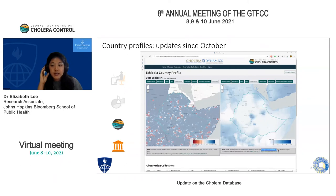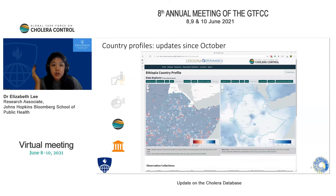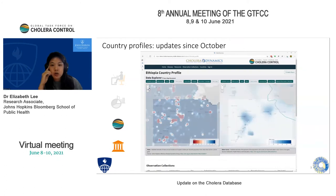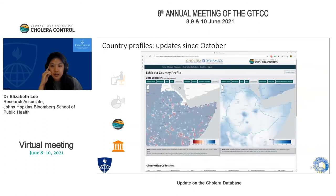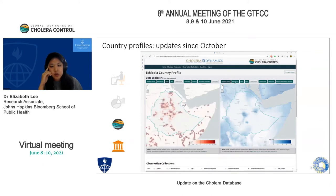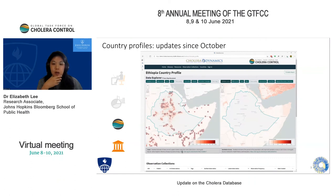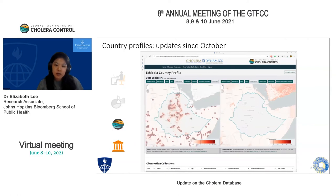On the right is access to improved water, a modeled estimate from the Institute for Health Metrics and Evaluation. You can zoom in and explore these gridded data in a highly resolved way. We also have maps for incident cases as well as access to sanitation from similar sources — modeled estimates at the grid cell level.